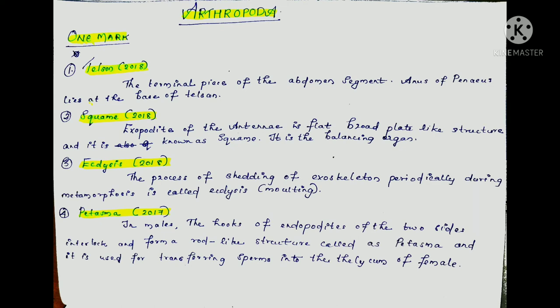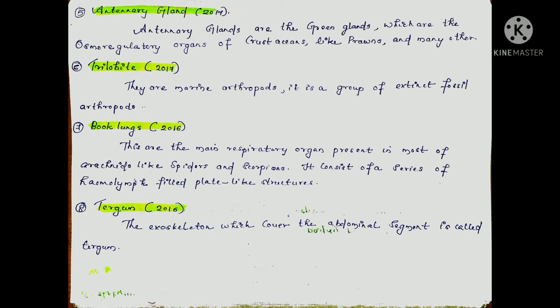The fifth question is the antennal gland, asked in 2017. The antennal gland is also called the green gland. It is an osmoregulatory organ found in crustaceans such as prawns, responsible for osmoregulation.